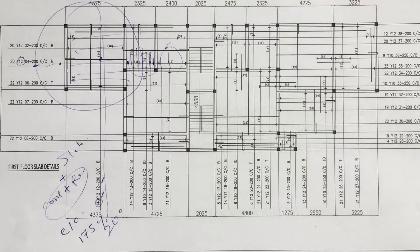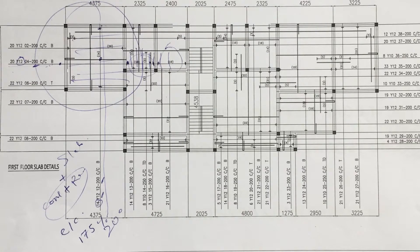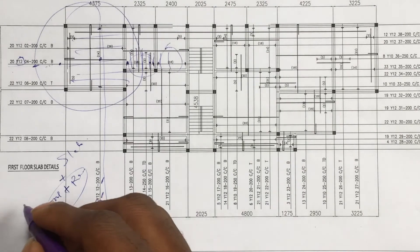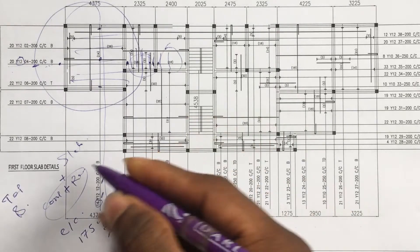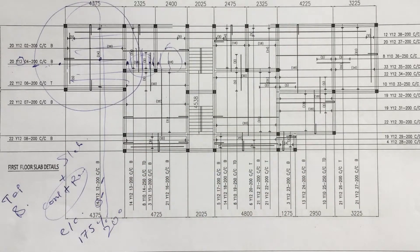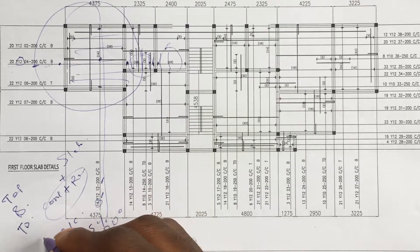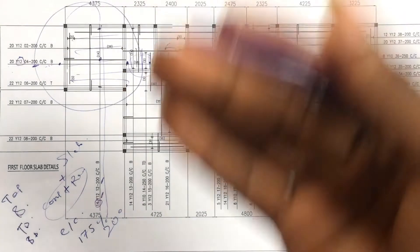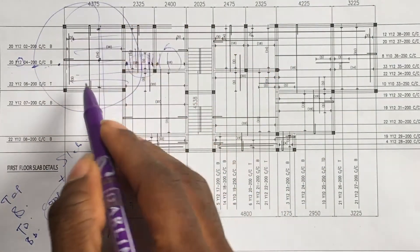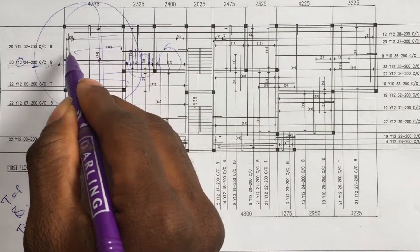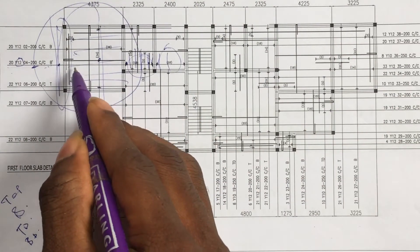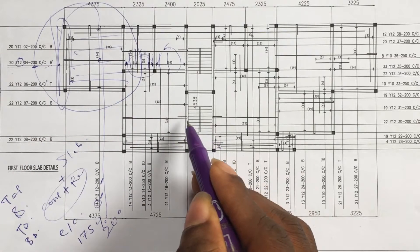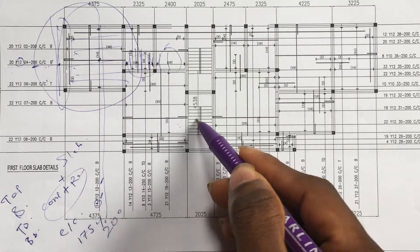Most of the information you get from a slab detail includes: your top reinforcement, your bottom reinforcement, your top distribution, and your bottom distribution. You should also notice that at the end where you have a discontinuous slab — it is discontinuous because you have nothing on that side, such as a staircase — there is no slab continuing beyond that point.